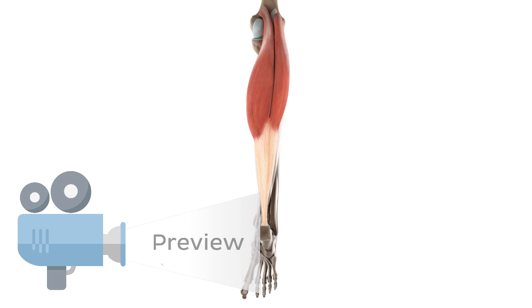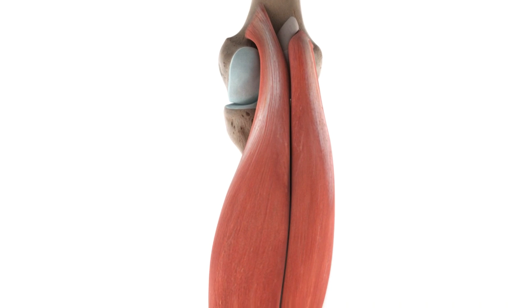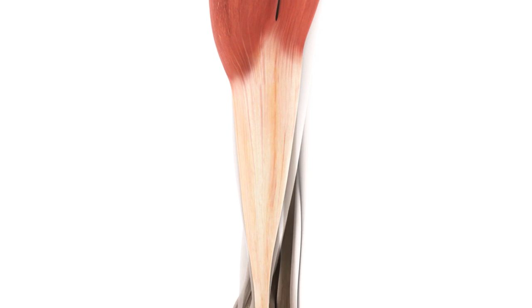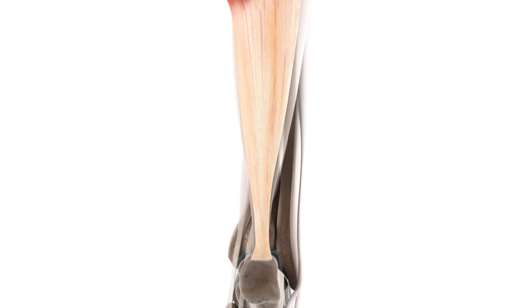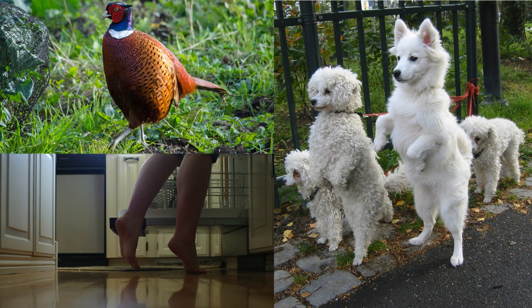Hello everyone! Before we put our anatomy learning caps on, let me ask you something. What do you visualise when you think about the functions of a muscle? You're probably thinking about a red coloured bundle of fibres contracting or relaxing to result in some sort of movement, right? Well, when I think about the functions of a muscle, I think about a pheasant, two feet and a dog, just like the ones you can see on your screen.